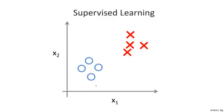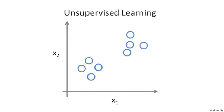In unsupervised learning, we're given data that looks different, given data that looks like this, that doesn't have any labels, or that sort of all has the same label, or really no labels. So we're given the data set, and we're not told what to do with it, and we're not told what each data point is. Instead, we're just told, here is a data set, can you find some structure in the data?